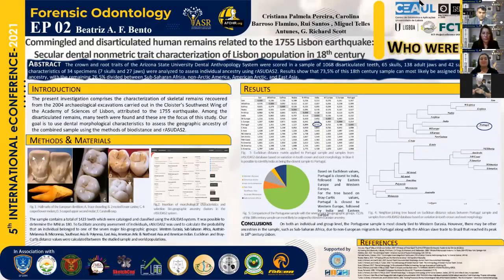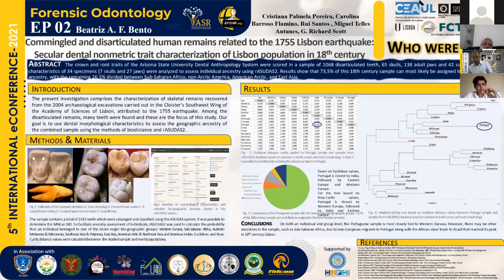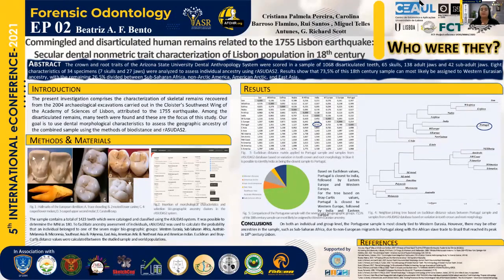This work began in 2004 when excavations carried out on the pavement of the southwest wing of the Academy of Science of Lisbon needed to be interrupted due to an archaeological finding of disarticulated remains. Later, these remains were attributed to the 1755 Lisbon earthquake. It is important to notice the diverse ethnicities and cultures represented in Lisbon at that time, since the city has been long known for its important role in the route of India and since the slave trade in Portugal reached its peak at the same time.